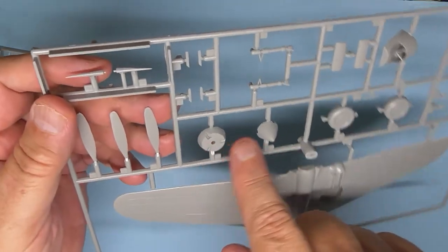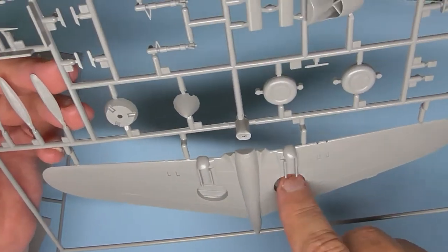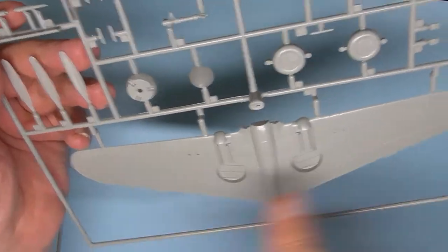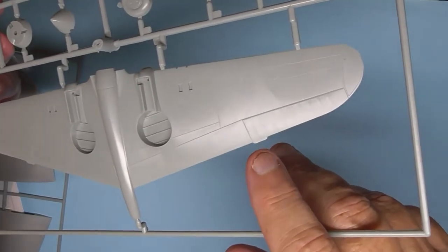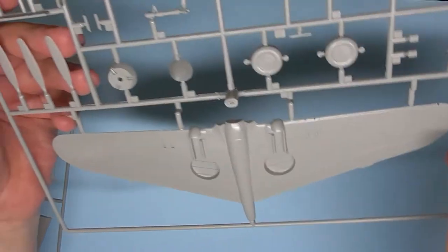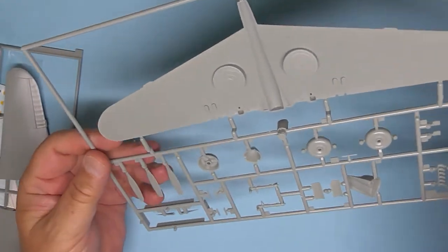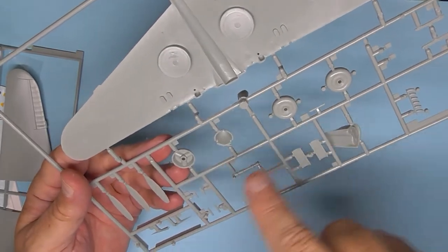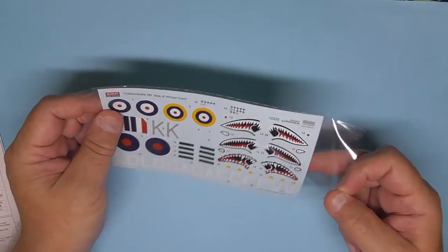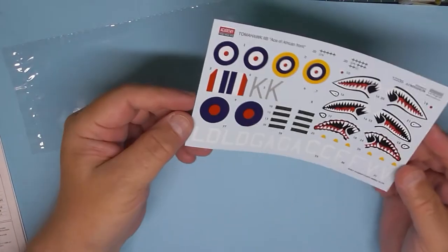More undercarriage parts, the nose and the lower wing, and this again has fine recessed details. The ribbing on the ailerons is very subtle, very nice, like it. So on the blind side, there's not much to say really.